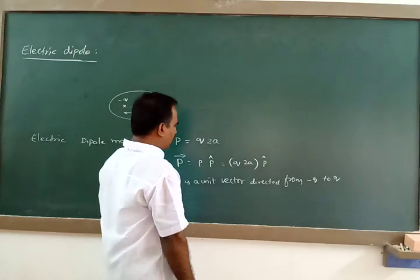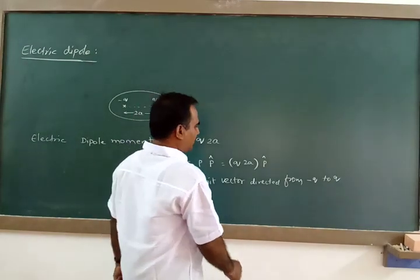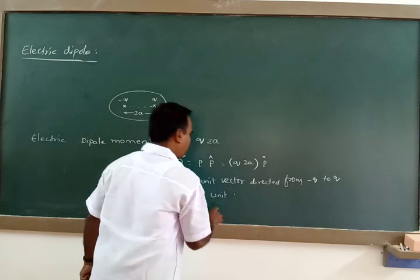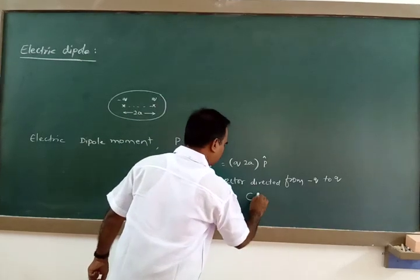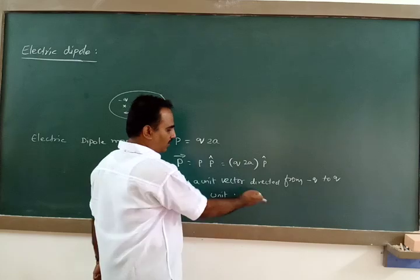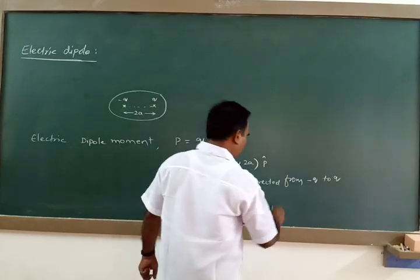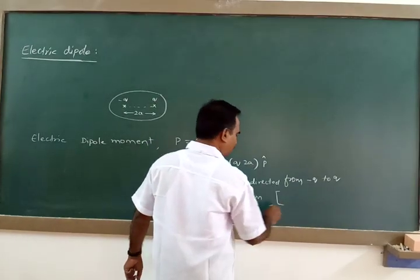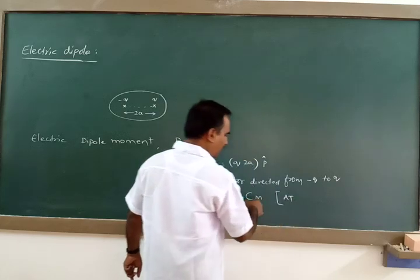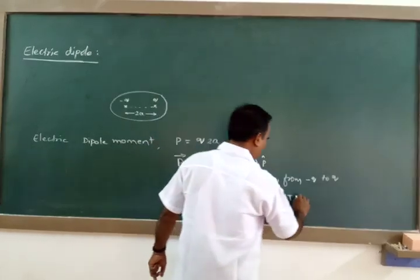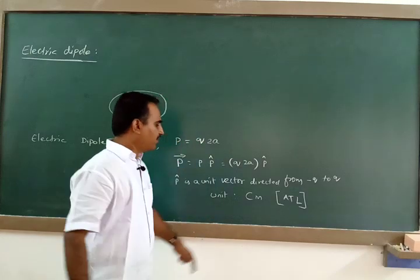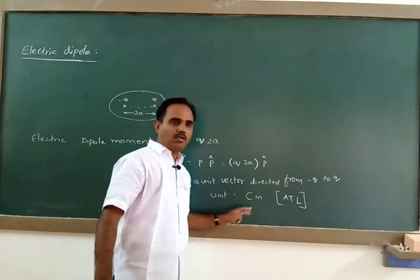The unit of dipole moment is Coulomb-meter. What is the dimensional formula? Coulomb is A·T, and meter is L, so the dimensional formula for dipole moment is A·T·L.